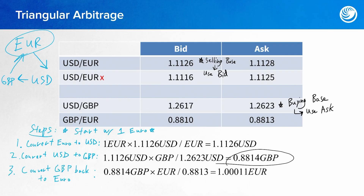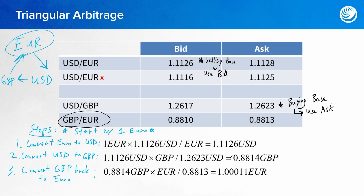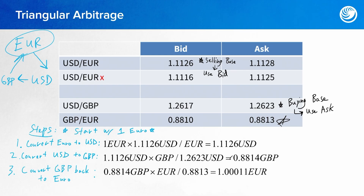Now we convert the British pounds back into euro — step three of the whole process. We take our British pounds from the previous step and look for the applicable rate. In this case we're buying the base again — we're buying euro — so we use the ask value and divide our British pounds by that rate, which gets us to a final euro amount. This is an arbitrage profit because it is greater than one. If no arbitrage were available, this value should equal one, but because it's not, we've netted an arbitrage profit of that many euros.